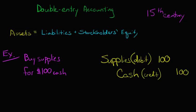That's what we want. We've got two entries here, and the main thing is that this column — the debits — equals the credits.